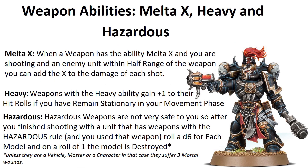Melta X: when a weapon has this ability, similar to Rapid Fire, if the target is within half range you add X to the damage characteristic — the closer you are, the more damage you deal. Heavy: weapons with the heavy rule usually hit worse, but if the unit remains stationary, you add one to hit rolls — making it almost 17% better.